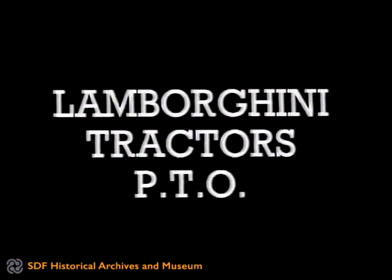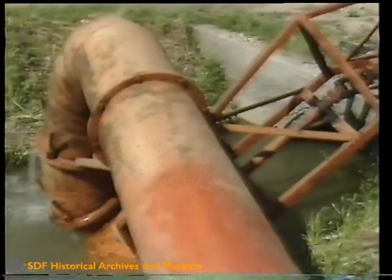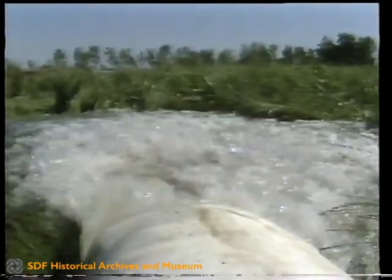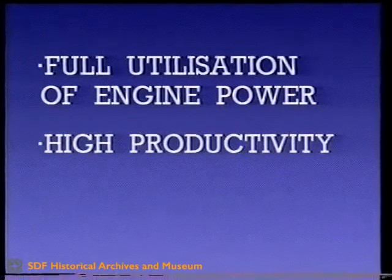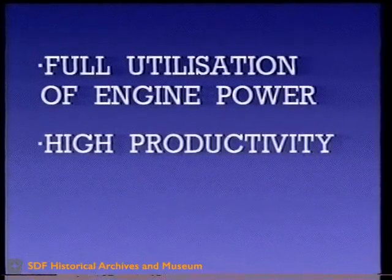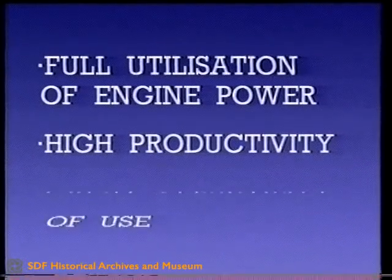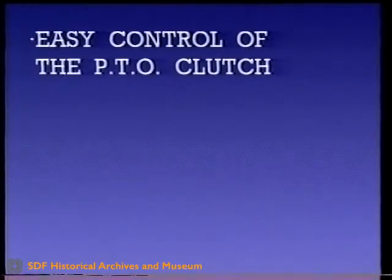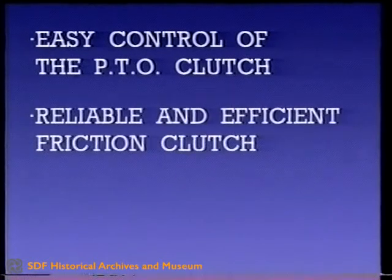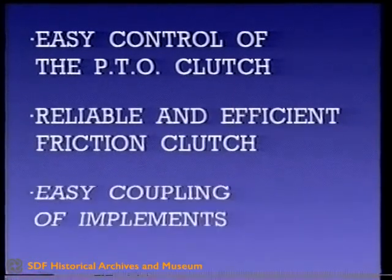The trend is now towards giving tractors a front power takeoff too, so as to be able to use two implements simultaneously, one at the front and one at the back. The types of PTO generally used nowadays are PTO synchronized with the engine, and PTO synchronized with the tractor's rear wheels. On Lamborghini tractors, we have created power takeoffs with solutions that turn our tractors into true mobile power units, thus guaranteeing full utilization of engine power via the higher efficiency of the transmission, high productivity from the most convenient ratios between engine output and power takeoff speed, great versatility of use, easy control of the PTO clutch, a reliable and efficient friction clutch, and easy coupling of implements.